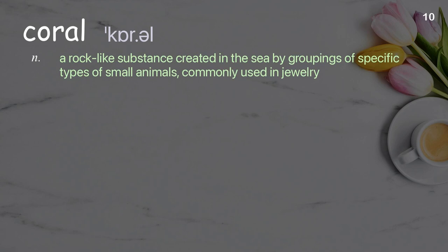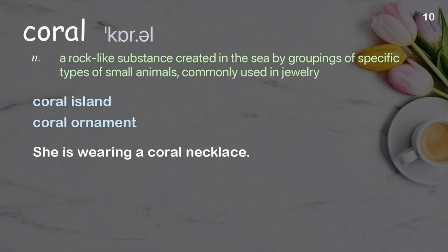Coral: a rock-like substance created in the sea by groupings of specific types of small animals, commonly used in jewelry. Examples: coral island, coral ornament. She is wearing a coral necklace.